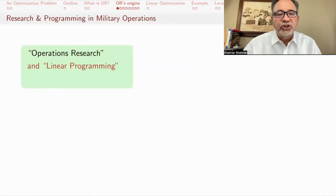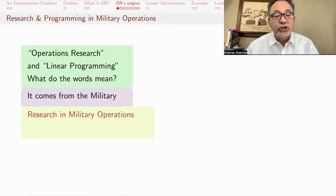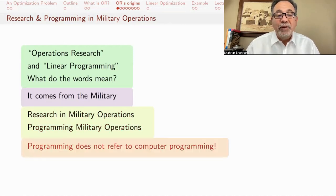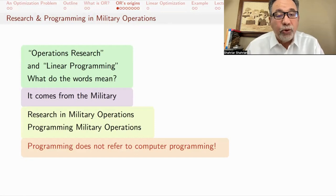Where does this word operations research and the word linear programming come from? They come from the military. Operations research is research in military operations. Linear programming is programming military operations. And programming does not refer to computer programming. Operations research and linear programming predate computers. While we do use computers quite a bit now, linear programming is not about computer programming.